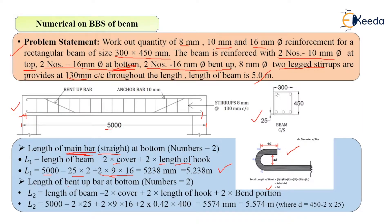Now let's calculate length L2 — the length of the bent up bar at the bottom. Two bars of 16 mm diameter are bent up, so we calculate this length as well. The formula is similar but we also add the bend portion: length of beam minus two times cover plus two times hook length plus two times bend portion — that extra bend length must be added to the bar.